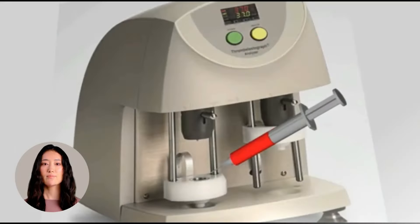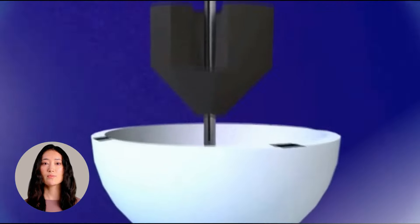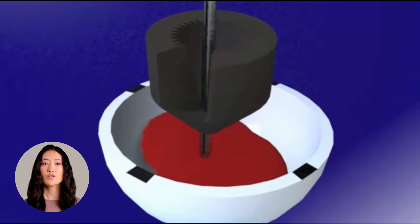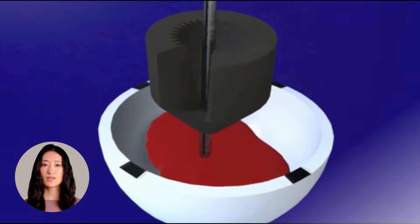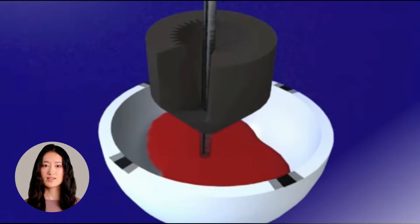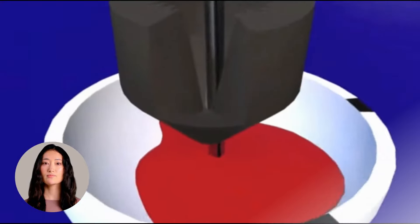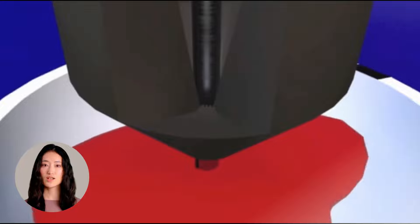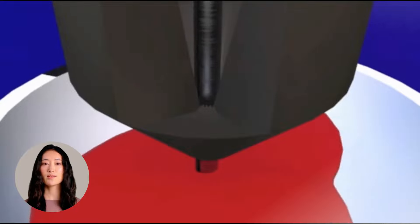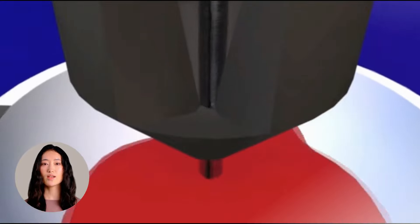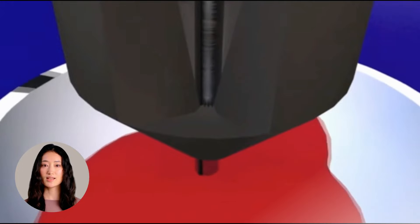The test is done by adding the citrated blood into the sample cup of the TEG machine. The cup oscillates around a submerged torsion pin which is connected to a computer. As coagulation occurs, the pin adheres to the clot and starts to move with it. The magnitude of the pin motion is directly related to the strength of the clot, and pin motion is displayed graphically by the computer.